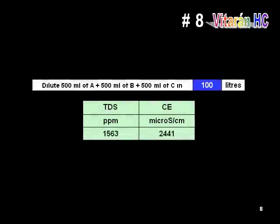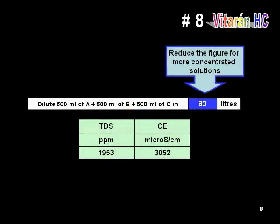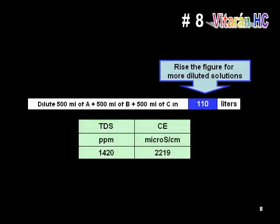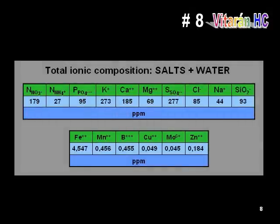In sheet number eight, you can adjust the concentration of the final nutrient solution to provide the specific requirements of plants being grown. For a more concentrated solution, the amount of water supply in the blue cell will be lower than 100, and for solutions of lower conductivity, this figure will be higher than 100. Also, double-check that the final ionic composition is correct — neither red nor yellow flag cells should be shown. If any cells appear in either of those colors, possibly due to the high concentration selected for your particular plant's requirement, then it will be necessary to return to sheet number two and make further fine-tuning adjustments to bring that particular element into line.